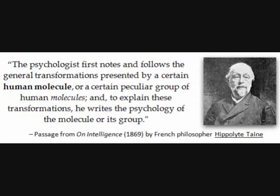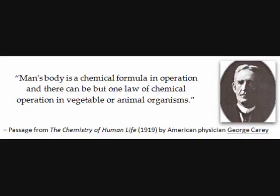The first to specifically define a person as a human molecule, coining this term, was French philosopher Hippolyte Tain in 1869: 'The psychologist first notes and follows the general transformations presented by a certain human molecule, or a certain peculiar group of human molecules, and to explain these transformations, he writes the psychology of the molecule, or its group.' The first to state specifically that a person's body is a chemical formula in operation was American physician George Carey in 1919: 'Man's body is a chemical formula in operation, and there can be but one law of chemical operation in vegetable or animal organisms.'